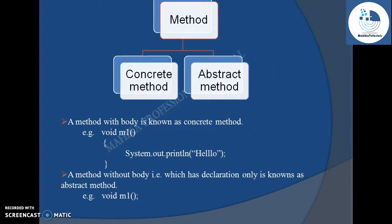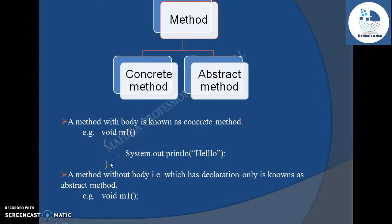Before discussing abstraction in detail, let us see what are the types of methods we can create in Java. A method in Java can be either a concrete method or an abstract method. A method with a body is known as a concrete method — that is, a method for which we give the implementation. Whereas a method without a body, for which only the declaration or signature is given, is known as an abstract method. Abstract methods are used to achieve abstraction in Java.